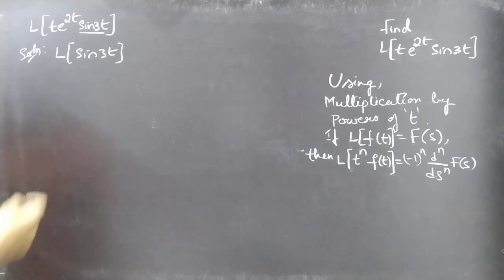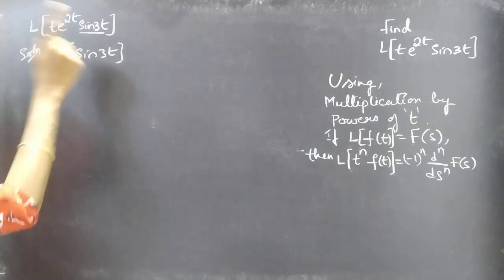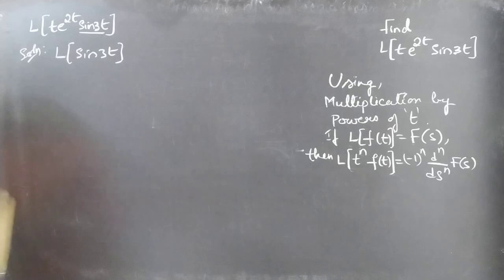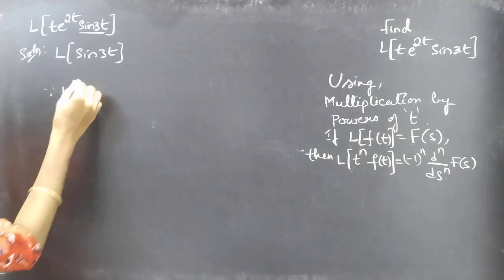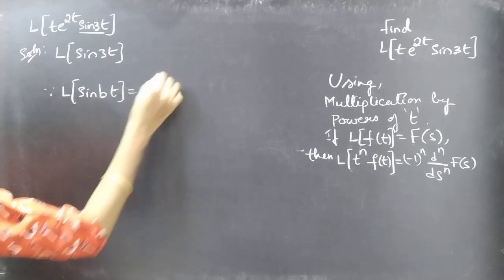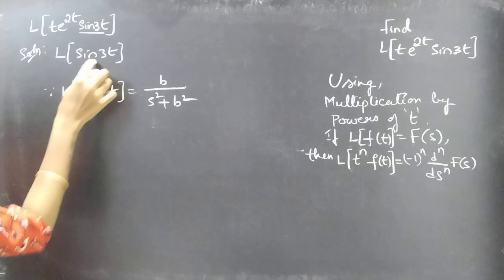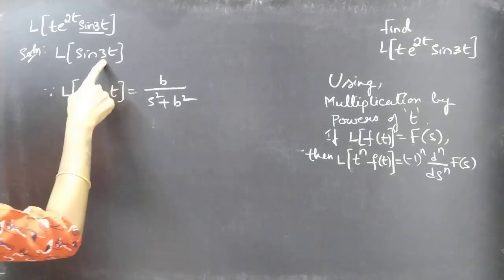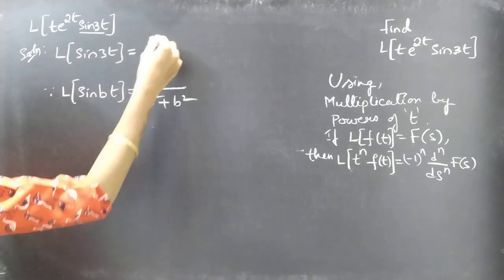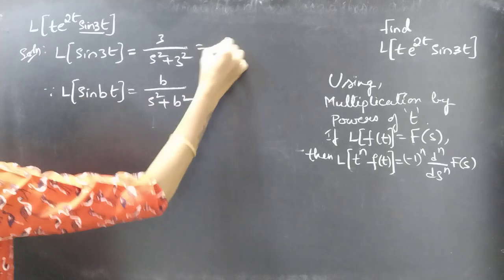For now, just forget about e^(2t) and we are going to find L{t·sin(3t)}. Before that, we'll find L{sin(3t)}. Since we know that L{sin(bt)} = b/(s² + b²), for b = 3 we get L{sin(3t)} = 3/(s² + 9).